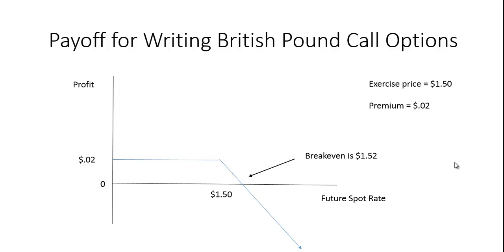If someone is buying call options on pounds, there must be someone writing or selling options on pounds, and their payoff diagram is the mirror image of the person who bought the call option. Because this is a zero-sum game, any money made by the person who purchased the call option is a loss to the person who wrote it. The writer starts two cents ahead because they received the two-cent premium, and as long as the price is below $1.50 they keep it. As the price rises above $1.50 they start to lose money, with a break-even point of $1.52.